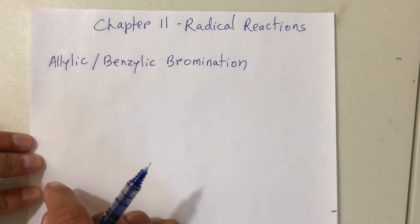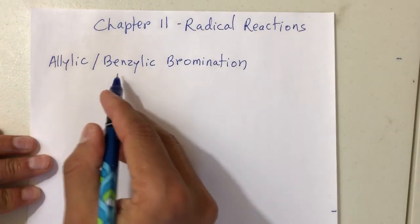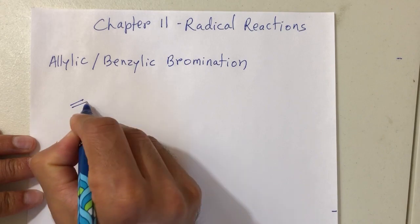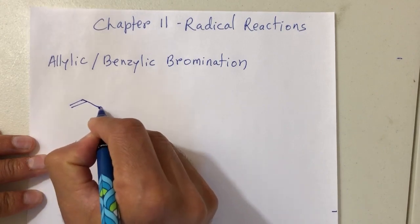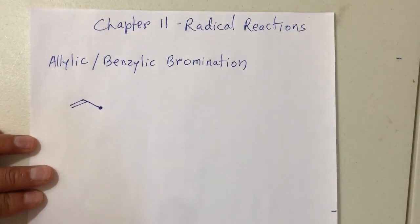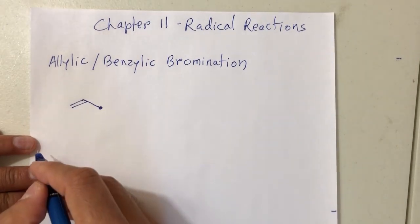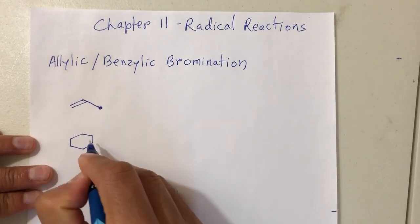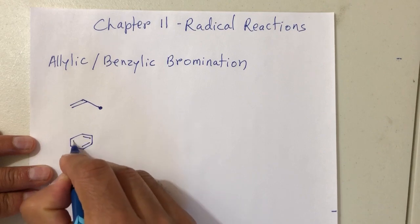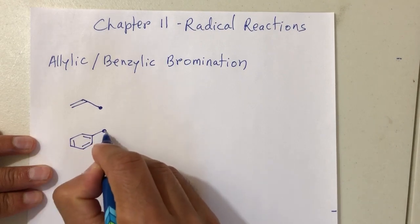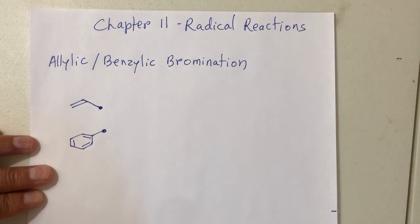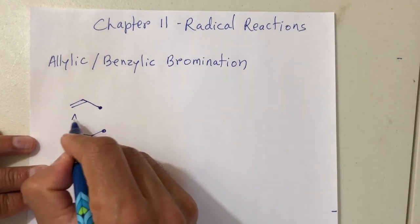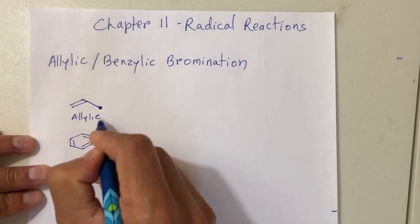The first reaction is called allylic and benzylic bromination. Allylic is the carbon that is directly attached to the double bond. Benzylic is the carbon which is attached to the aromatic ring. That carbon's positioning is called allylic or benzylic.